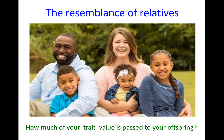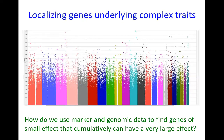It also addresses fundamental questions like what's the resemblance between relatives? How much of your trait value is passed on to your offspring? This directly relates to things such as disease risk. If a relative has a disease, does that increase or decrease your chances of getting it?